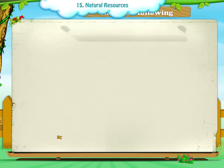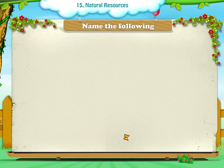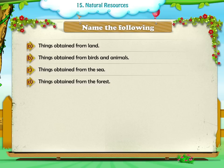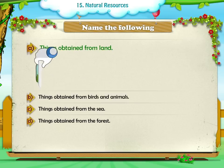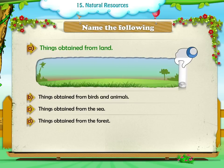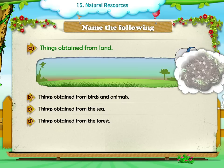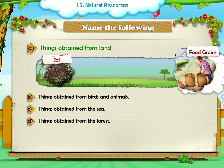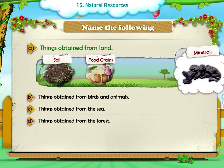Activity 2: Name the following. A. Things obtained from land: Soil, Food grains, Minerals.